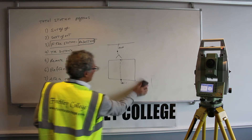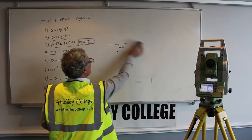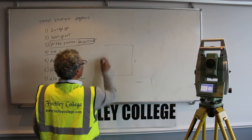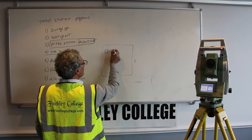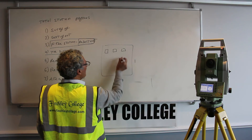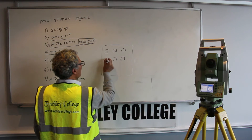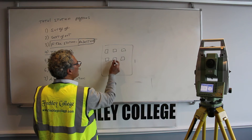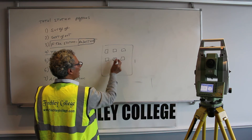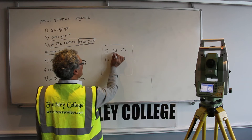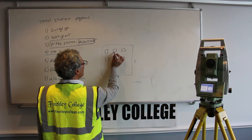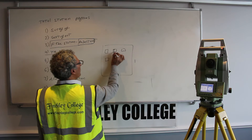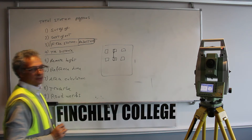Another advantage of the remote height program is measuring window heights on a building. You simply sight to the bottom of a window, then sight to the top, and that gives you the height of the window. You can then sight to the next window up, and that will tell you the difference between the windows — so as you go up, it shows you the height for each.